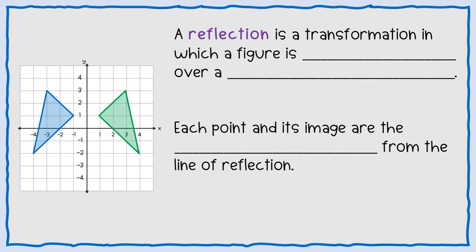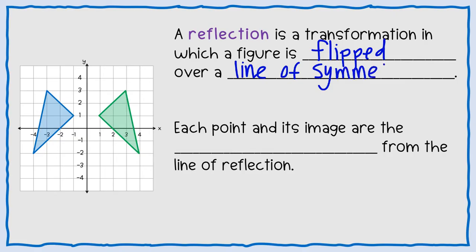So first, let's start with a definition. A reflection is a transformation in which a figure is flipped over a line of symmetry. So if you look at that image to the left, if you start with the blue and you go over to the green one, you can tell that it is flipped. And the line that it flipped over is the y-axis, so that yellow would be the line of symmetry.